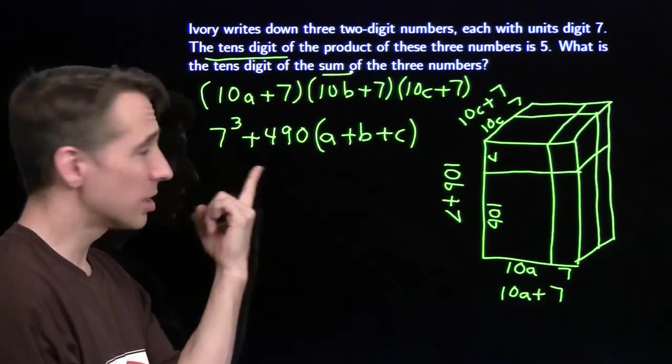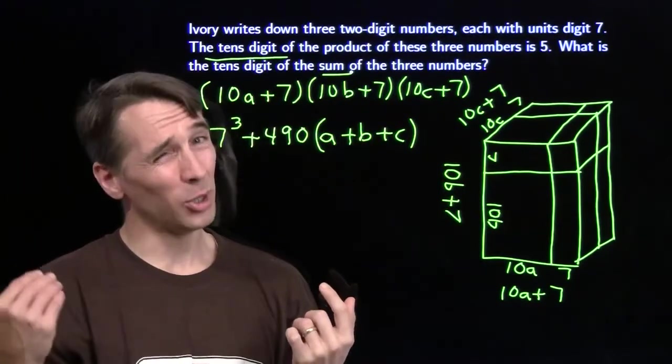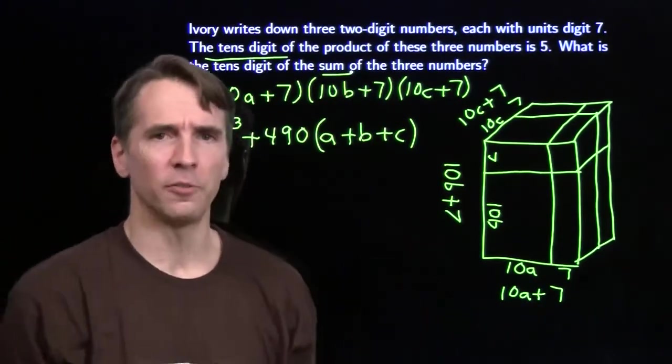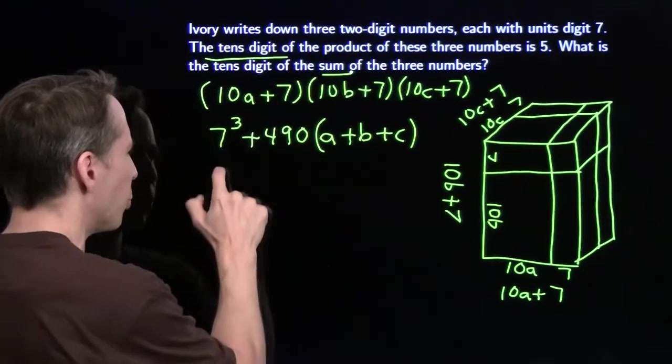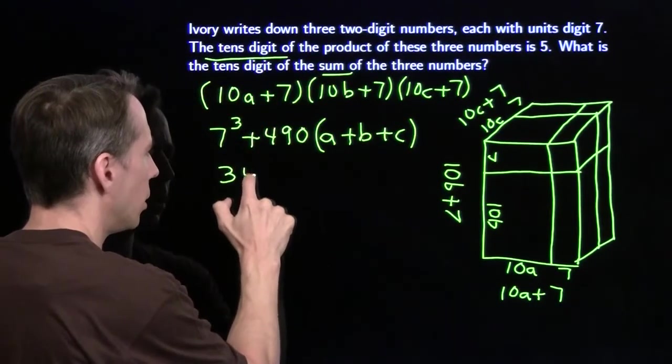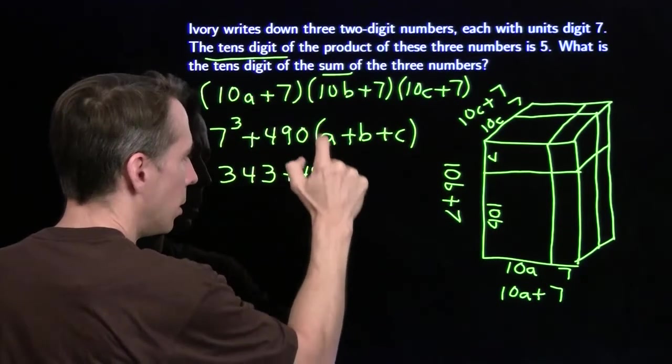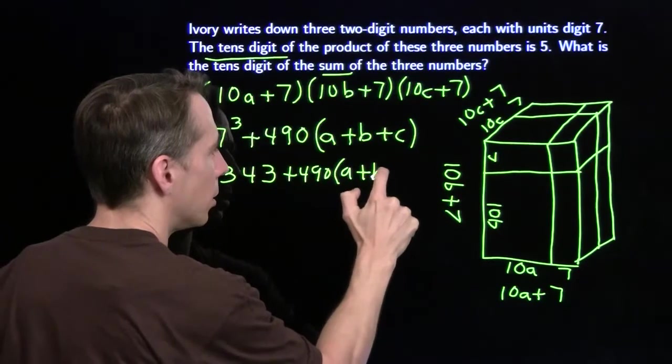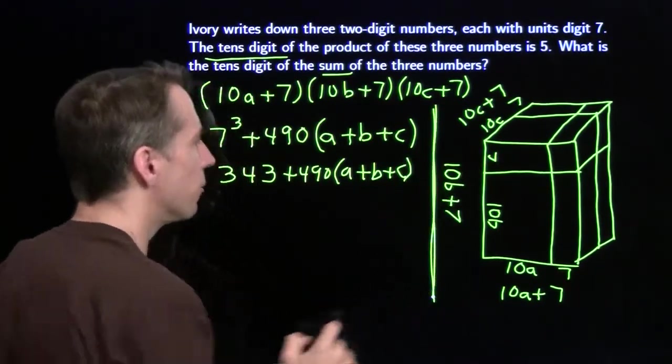But what are we going to do here? First I have to deal with 7 cubed. 7 squared was 49, so 7 cubed, 7 times 49, I'll multiply 7 and 50 first, that'll give me 350. Go back one 7, because I have one too many 7's there, it brings me to 343. 490 plus 490 times the sum, a plus b plus c. Put in a barrier right there so we don't get confused.